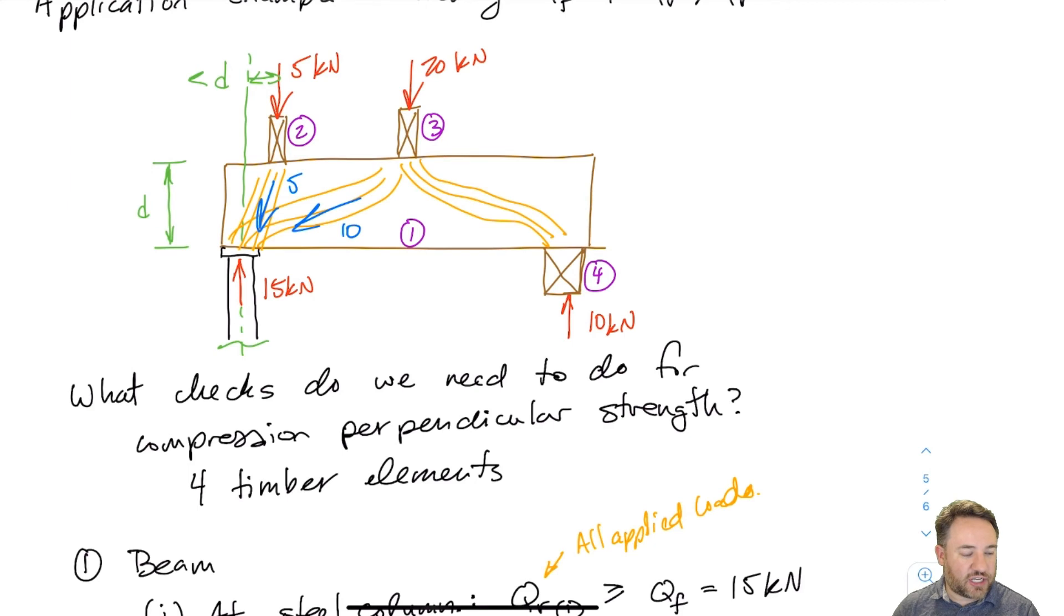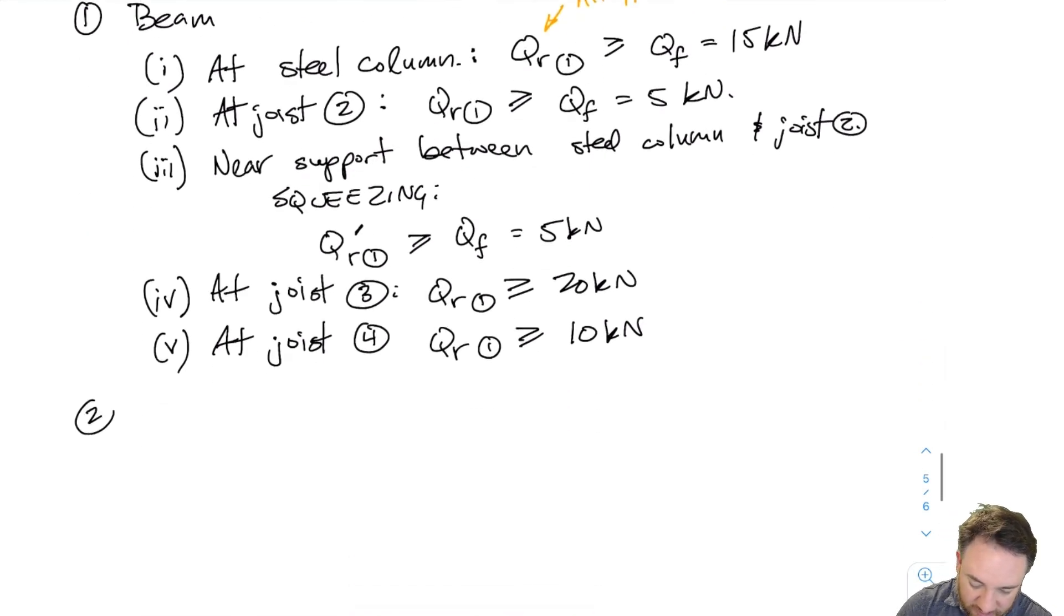Now I have to conversely check the strength of the joists because the beam is bearing up on the joists. Just as the joists are bearing on the beam, the beam is providing a force to the joist in the opposite direction. So I'm going to check those ones. These ones are going to have different resistances, potentially, because the joists might be made of different material than the beam. I mean, the joists could be timber, they could be lumber, and the beam could be glulam, for example. So for each joist, I have the one check, QR for joist two, greater than or equal to five kilonewtons, which is the load that joist two applies to the beam. And conversely, that's the same load that the beam applies to the joist. And same for joists three and four.